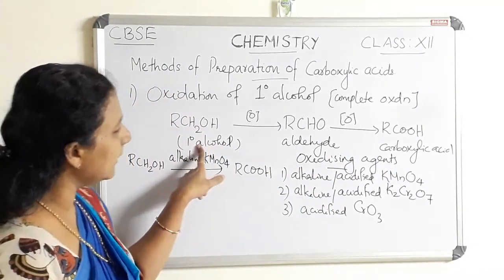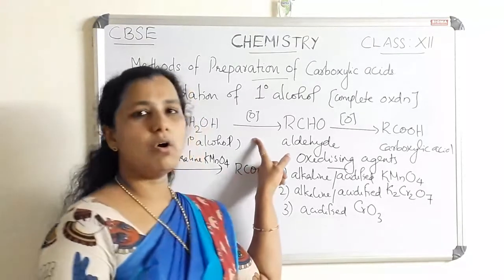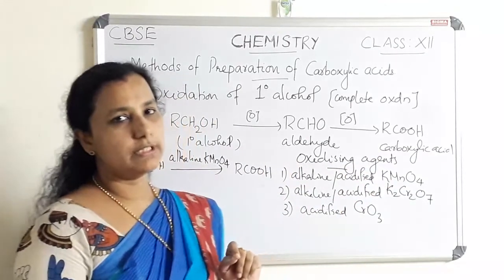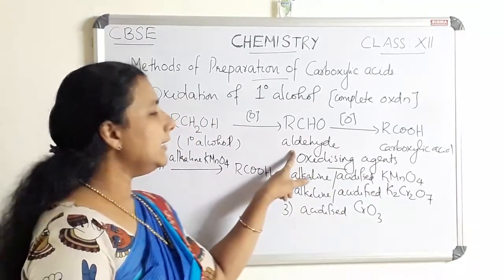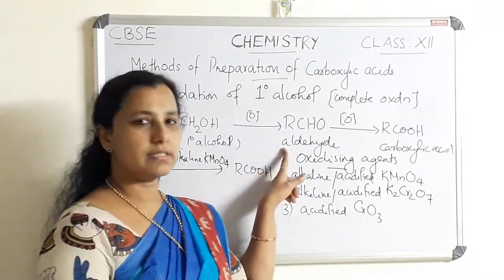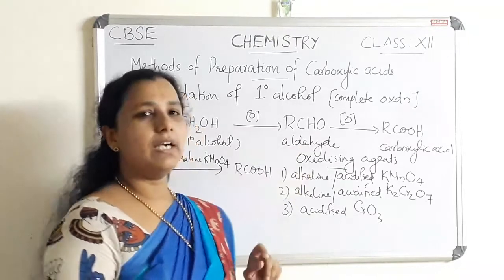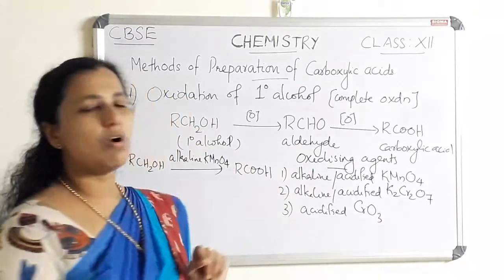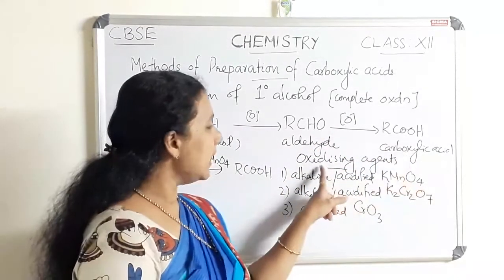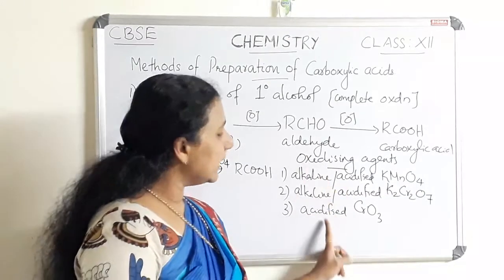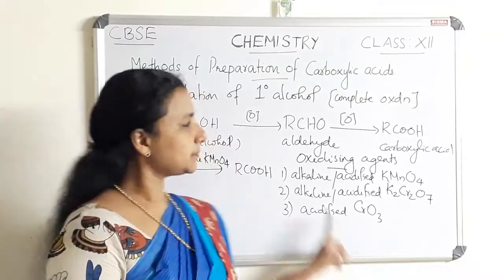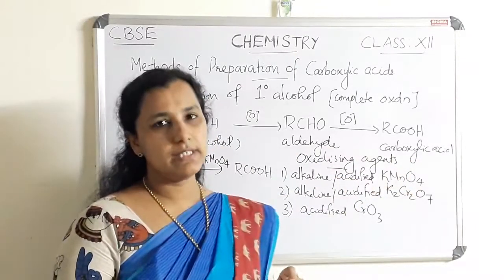With a strong oxidizing agent, the primary alcohol is completely oxidized to carboxylic acid. With a mild oxidizing agent, the reaction ends at the aldehyde stage — aldehyde will be the product. If you are using a strong oxidizing agent — KMnO4, K2Cr2O7, or CrO3 — carboxylic acid will be the end product.